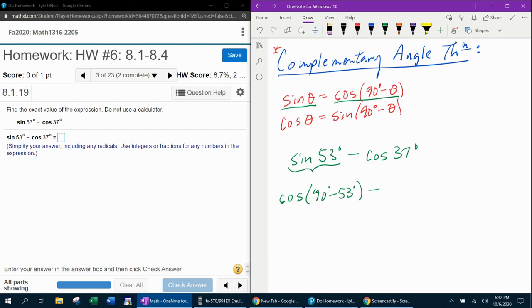Using my complementary angle theorem, 90 minus 53 is 37. So what they've given me here really is just a fancy way to write zero. Anything minus itself is zero.